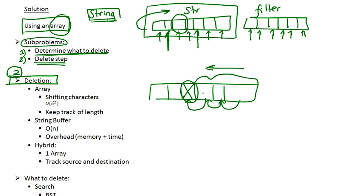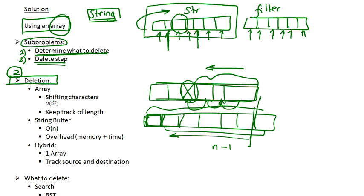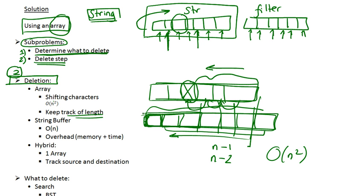But this is really not efficient. In the worst case scenario, suppose you had a filter which was exactly the same as the string, meaning you have to remove every single character. To remove the first character you shift n minus one characters; then to remove the second character you shift n minus two times, and so on and so forth. This gives you an algorithm of O(n²), which is really not efficient. On top of that, since the array has a fixed size, you're going to have to keep track of the length to know where your output ends. So this approach is not efficient.